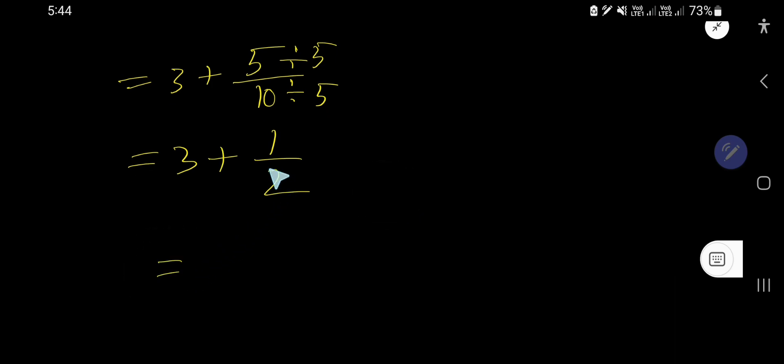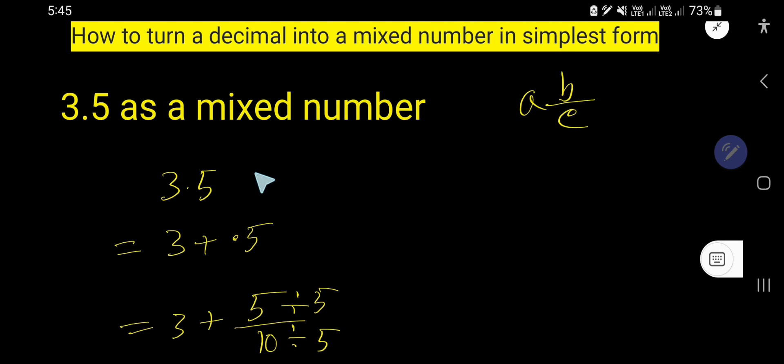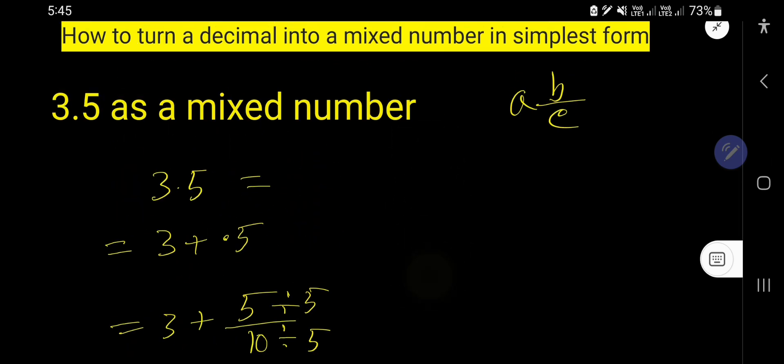Now if you write together these two numbers, you can write like this: 3 and 1 half. And this is the simplest form of this decimal number. So if you convert 3.5 as a mixed number, then you will get this.